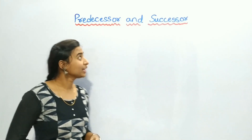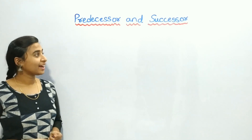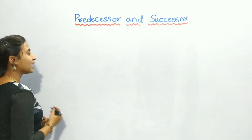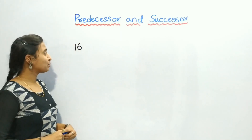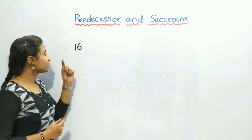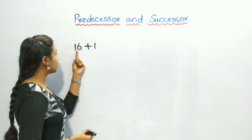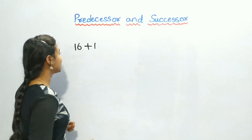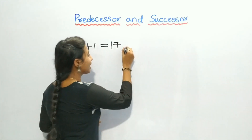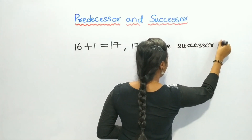Now let us see the next topic: Predecessor and Successor. Let us take the number 16. I want the Successor of 16. The Successor is found by adding 1 to the number. So, 16 plus 1 equals 17. Therefore, 17 is the Successor of 16.